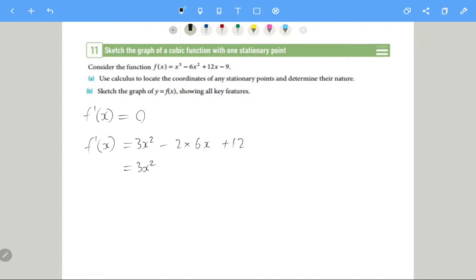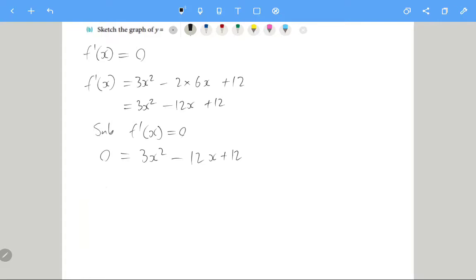So the derivative we get is 3x² minus 12x plus 12, and we're solving it for when it's equal to 0. So f'(x) is equal to 0. And now we're going to factorize the right-hand side. It has a common factor of 3. Let's get that out.